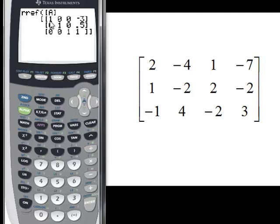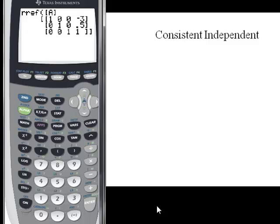And these are our solutions. What this is saying is one times x equals negative three, one times y equals one half, one times z equals one. So we have what's called a consistent independent matrix with the solutions: x equals negative three, y equals one half, and z equals one.